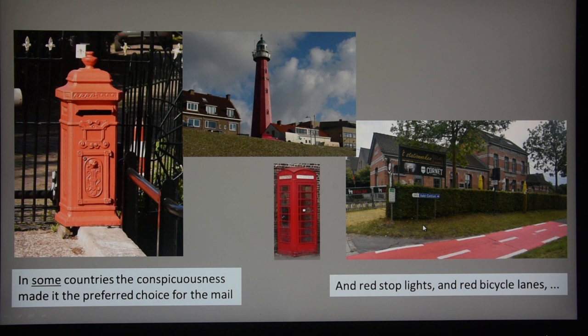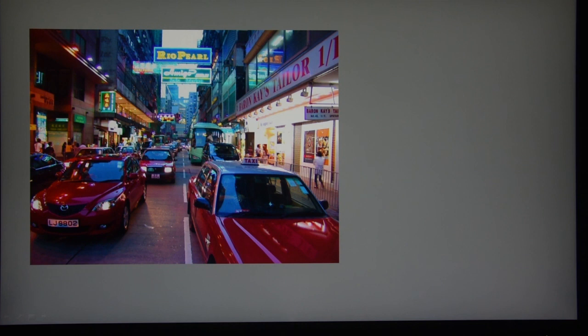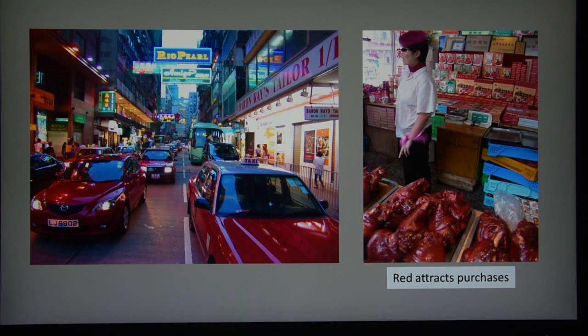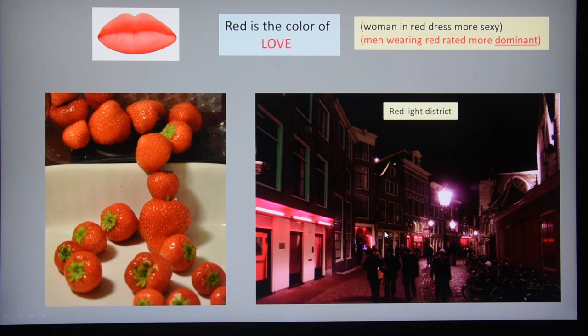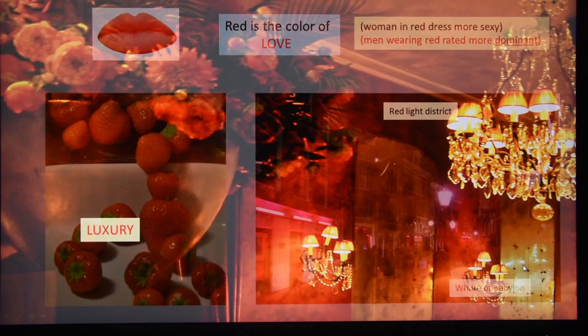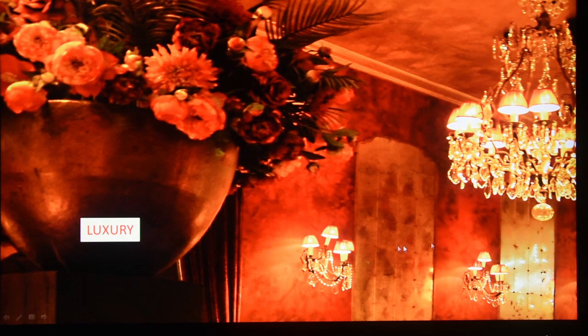Here people may want their taxi red — maybe they get more customers — or even the entire shop. It's also the color of love. Women know that if you paint your lips red you may be more attractive. There's also been research that women in a red dress are more sexy to men, and men wearing red like a red tie are usually seen as dominant. The strawberry may be seen as the fruit for lovers. But you also have of course the red light district, which shows another aspect of so-called love — a very old association, because already in the Bible the Whore of Babylon had a red cloak.